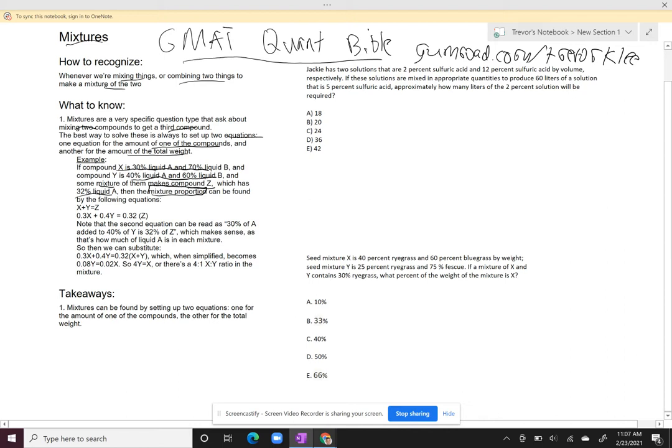Well, the mixture proportion can be found, first of all, by saying, when I mix all of X, and I mix all of Y, I get all of Z. Or I can say when I mix 30% of X, and when I mix 40% of Y, I get 32% of Z. Right?